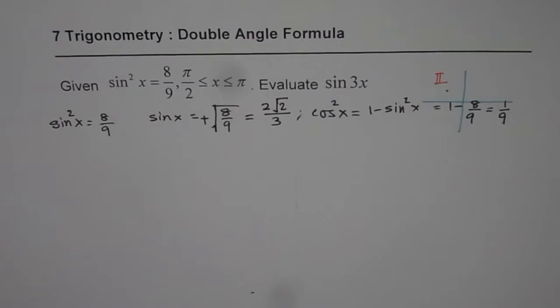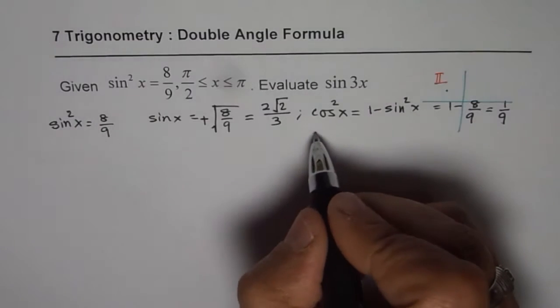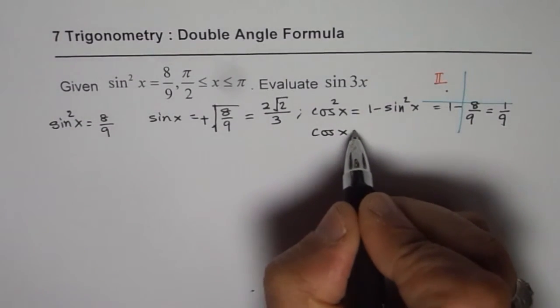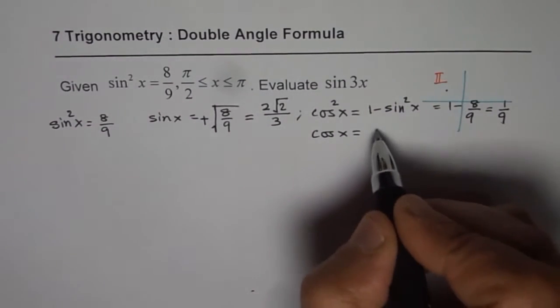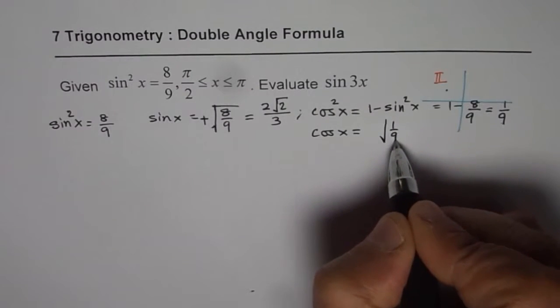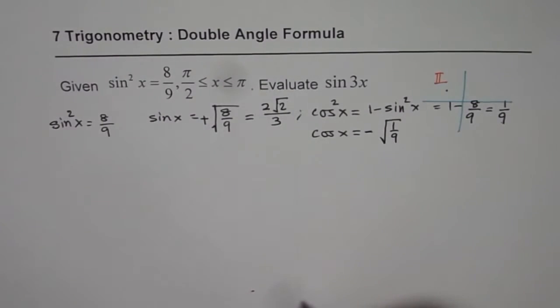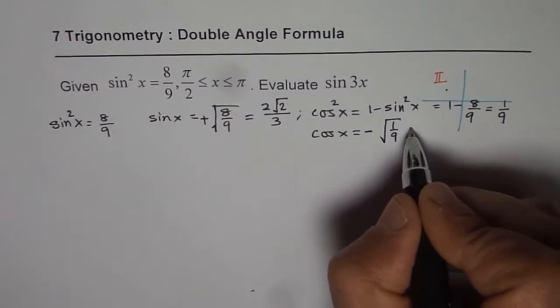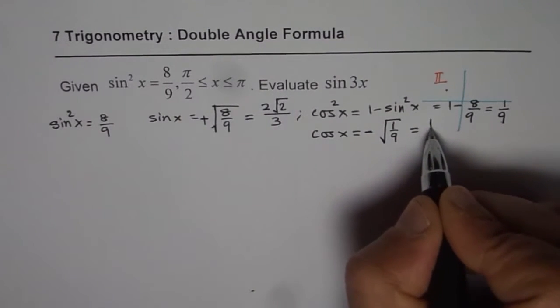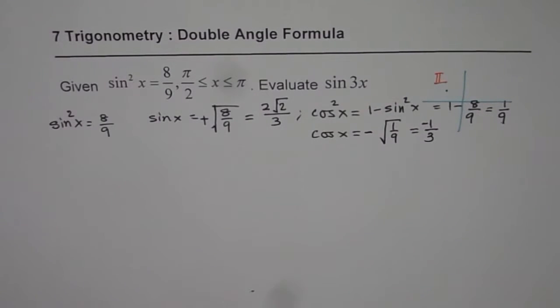So cos²x is 1/9. However, cos x will be the square root of 1/9. But since you are in quadrant 2, you have to take the negative value. So the value for cos x is going to be -1/3.